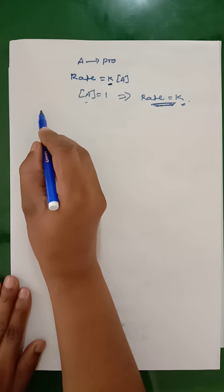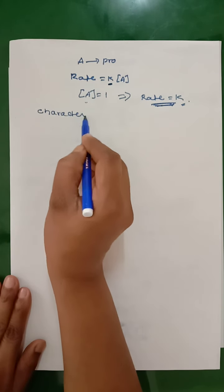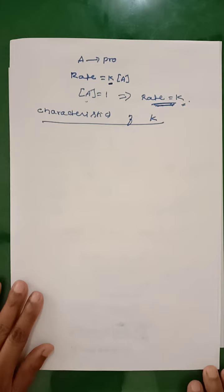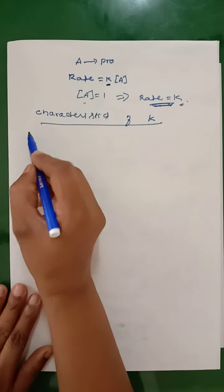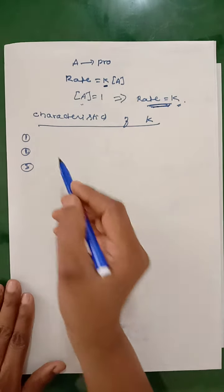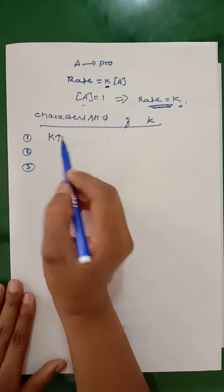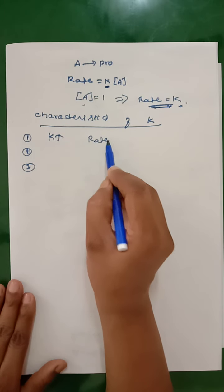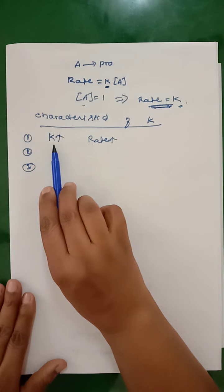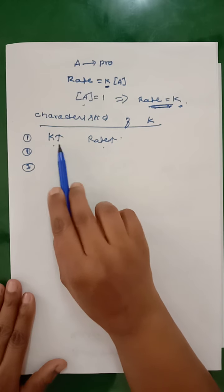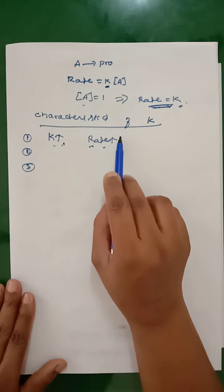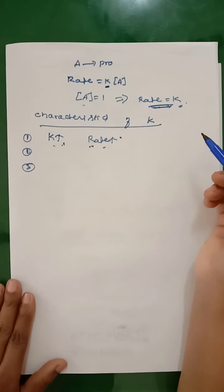Now we will study the characteristics of rate constant. We are going to study three different characteristics. The first one is: as the rate constant increases, the value of the rate of reaction also gets increased. That means higher the value of rate constant, more will be the rate of reaction. So these two are directly related — as k increases, the rate of reaction also increases.